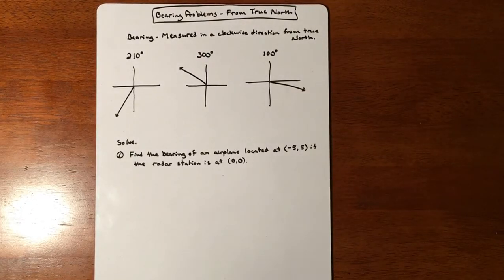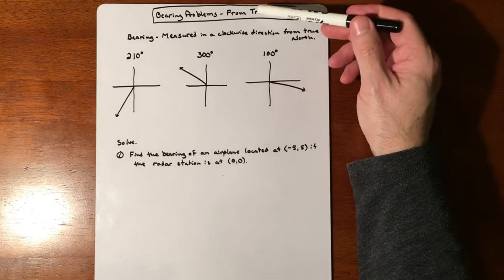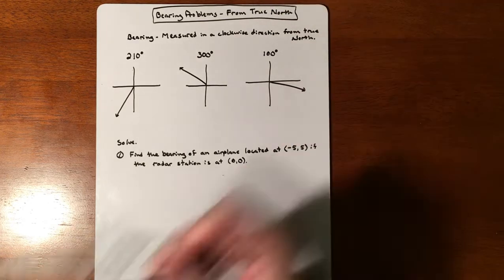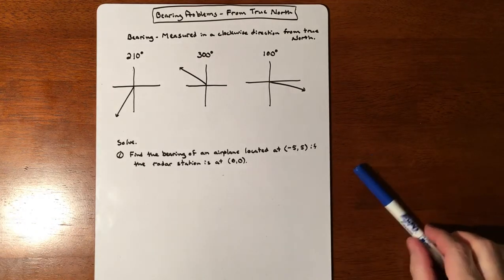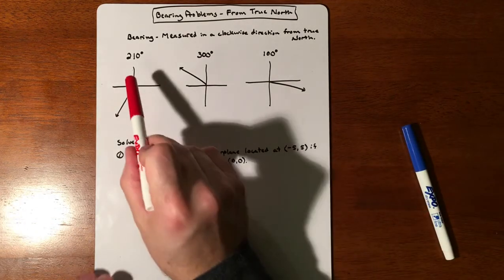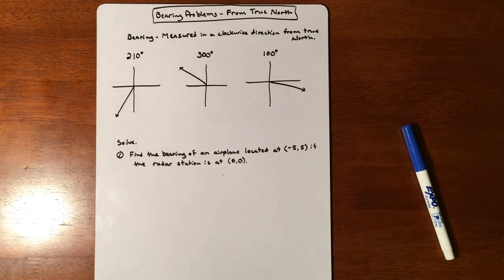In this lesson we are going to involve trigonometry that talks about bearing problems. There are two different kinds of bearings. This one we're going to be talking about is bearing from true north. If you were talking about 210 degrees, normally we would start in the x-axis and come around 210 degrees, but this is different.